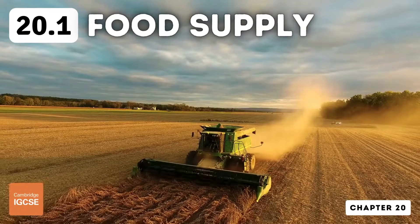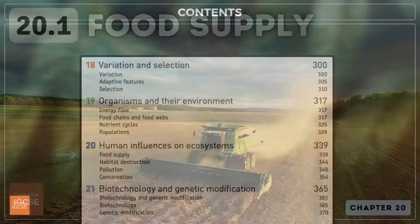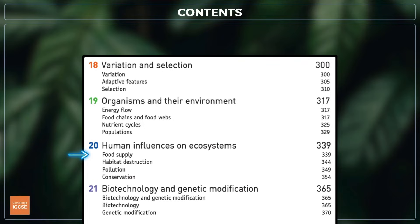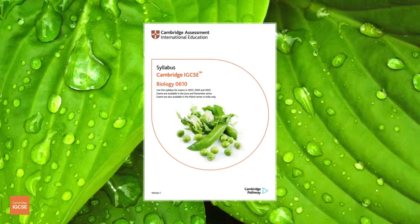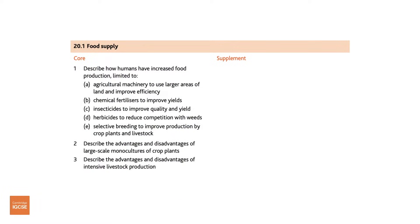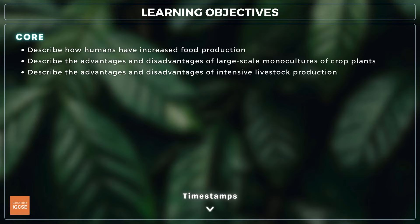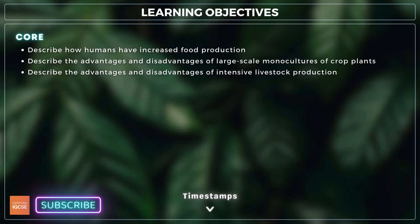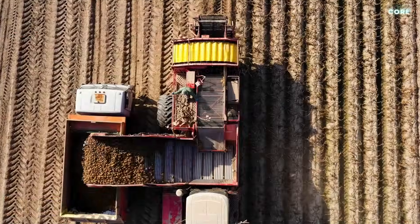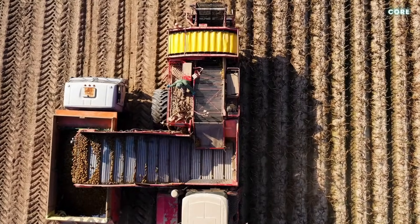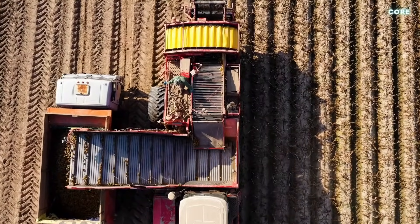Hello and welcome to another complete Cambridge IGCSE biology lesson, where you'll learn absolutely everything you need to know on topic 20.1, food supply. We'll be following the Cambridge syllabus exactly and cover everything you need for your final exam. For topic 20.1, you need to describe the ways in which humans have increased food production, and the advantages and disadvantages of large-scale monocultures and intensive livestock production. We'll begin with the different ways humans have increased food production to keep up with the demands of a growing population.